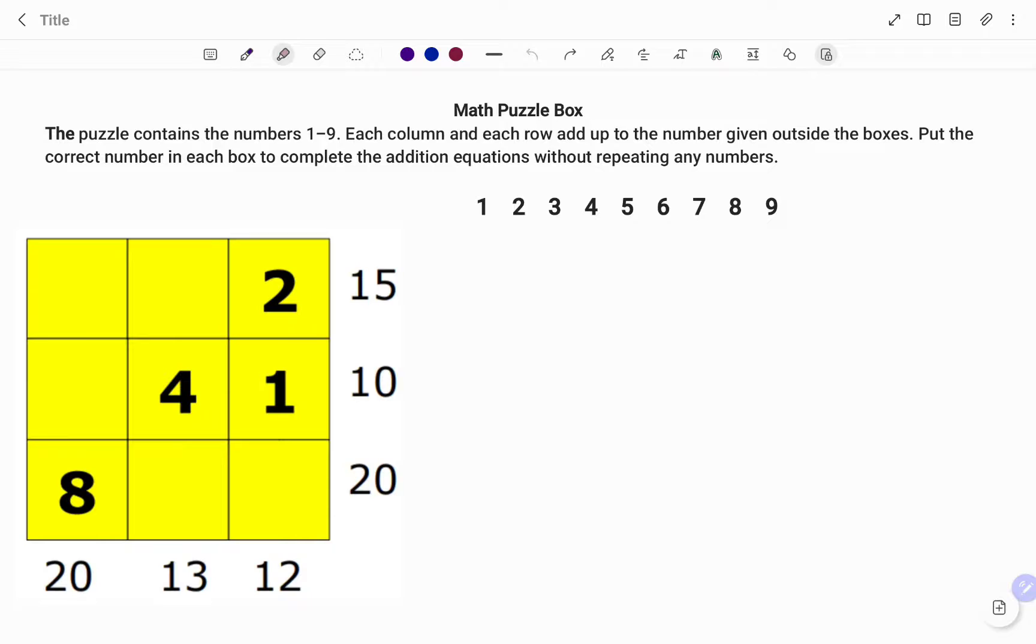The puzzle contains the numbers 1 to 9. Each column and each row add up to the number given outside the boxes. We have to put the correct number in each box to complete the addition equation without repeating any number.